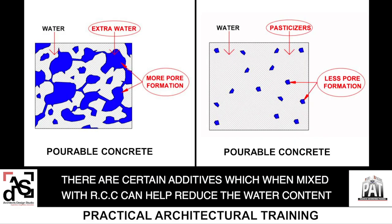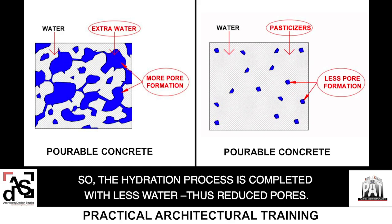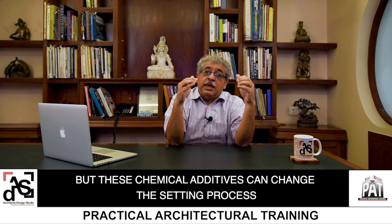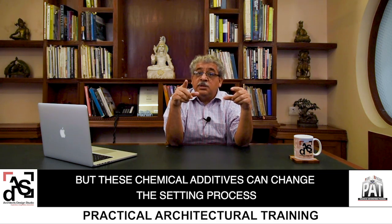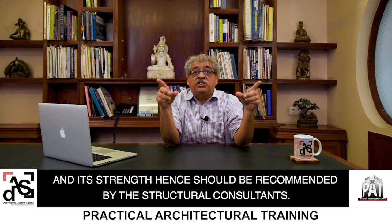There are certain additives which, when mixed with RCC, can help reduce the water content required and make concrete pourable without the extra water. These additives are called plasticizers. The hydration process is then completed with less water, thus resulting in reduced pores. However, these chemical additives can change the setting process and the concrete's strength, and hence their use should be recommended by structural consultants.